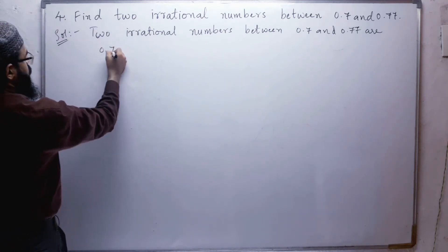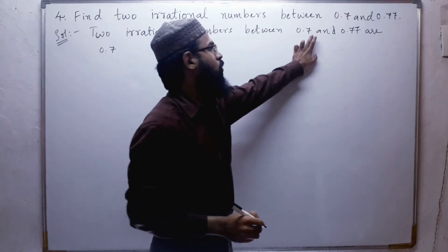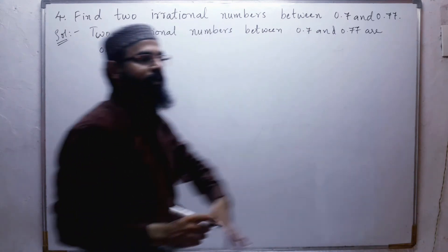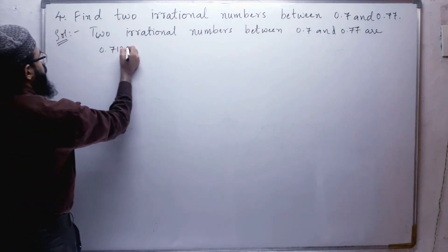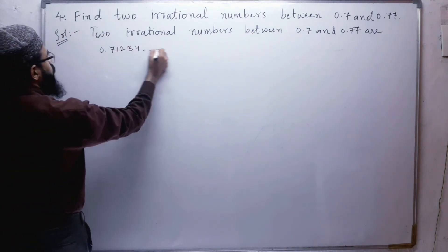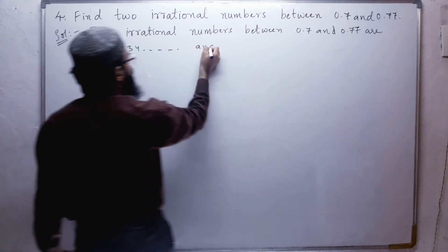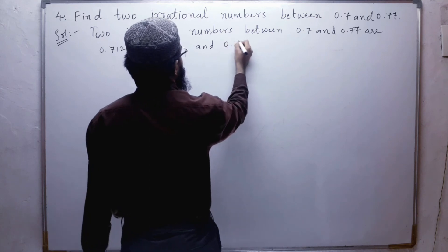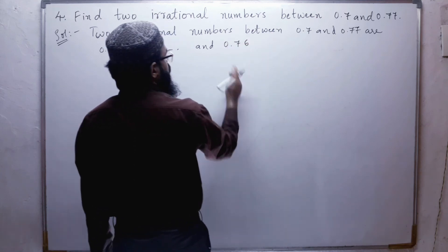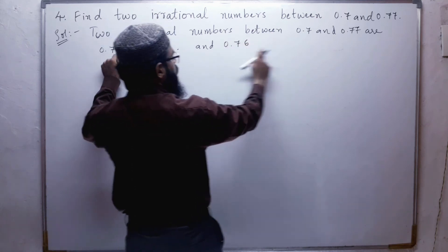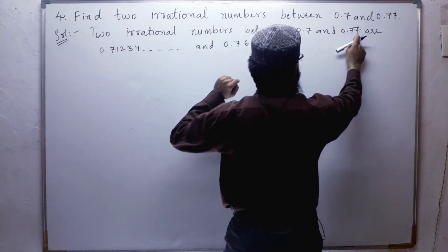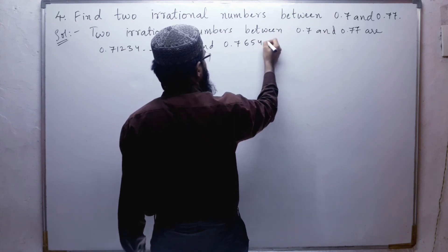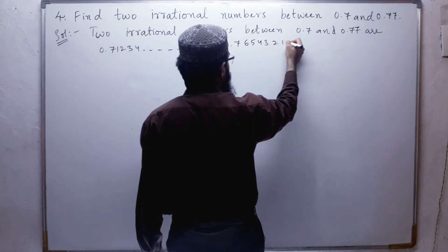0.7... — here after seven there is no number, so we can take something like one, but it should not repeat. So: 0.71234... and so on. And any other number, let us take 0.76 — so 0.76543... and so on. So seven-one and seven-six both come in between 0.7 and 0.77.